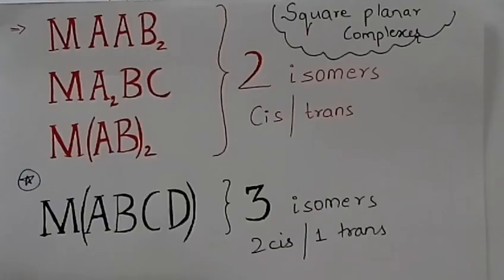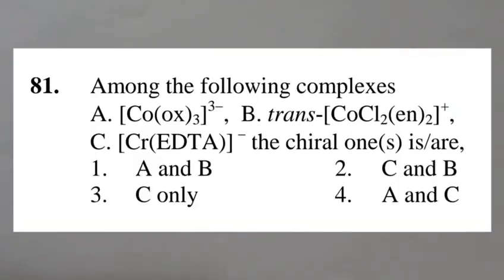Now let us talk about square planar complexes. All the possibilities in square planar complexes give two isomers except for the last, which gives three isomers: two cis and one trans. I will leave you with a question that came in CSIR NET exam December 2015.